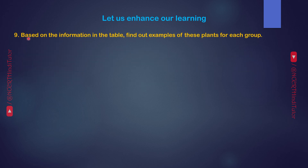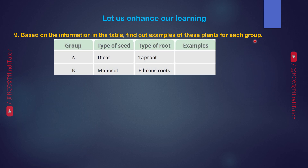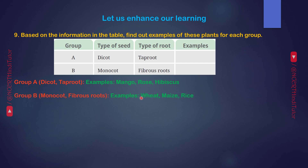Question 9. Based on the information in the table, find out examples of plants for each group. Group A: Type of seed — Dicot. Type of root — Taproot. Examples: Mango, Rose, Hibiscus. Group B: Type of seed — Monocot. Type of root — Fibrous roots. Examples: Wheat, Maize, Rice.